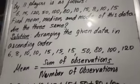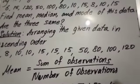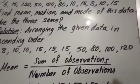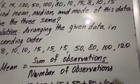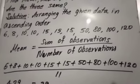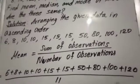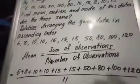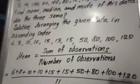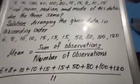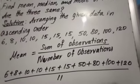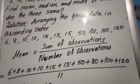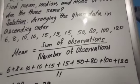Now first we will calculate mean. To calculate the mean, we know the formula: sum of observations divided by number of observations. So let us write sum of observations. Sum in the sense the answer of addition is called as sum. So let us find out the sum: 6, 8, 10, 15, 15, 50, 80, 100, plus 100, 20.